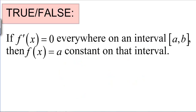Well, this goes back to the mean value theorem. Here are a couple of statements to help you remember what we learned from it. True or false: if F prime of X is 0 everywhere in an interval, then the function has to be a constant on that interval. This is true — a direct result from the mean value theorem. The only function that has a derivative of 0 is a constant.